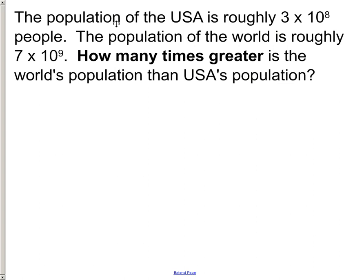Let's take a look at this one. The population of the USA is roughly 3 times 10 to the eighth power of people. Well, if we made that into standard notation, that'd be about 300 million people. The population of the world is roughly 7 times 10 to the ninth, so roughly 7 billion people. There we go, that would be 7 billion. This is 300 million.